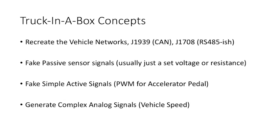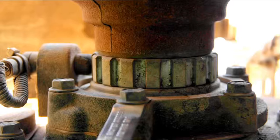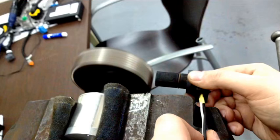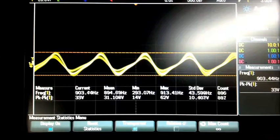The concepts behind the Truck in a Box: we wanted to recreate the vehicle networks including J1939 and J1708. J1939 is built on CAN; J1708 is kind of RS-485 — similar to J1850. It also fakes passive sensor signals. Oil pressure sensors, temperature sensors — those just measure voltage or resistance, and the ECM tends to freak out if they're not present. Some of the more complicated signals are things like the accelerator pedal and how the vehicle measures road speed. There's a tone ring on the back of the tail shaft. We hooked one up in a vise, put a sensor next to it, characterized the signal, and can play it back to the ECM — we can actually put miles on the truck on a bench.